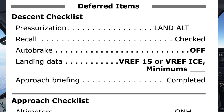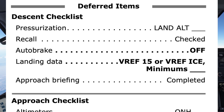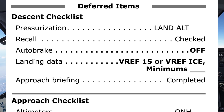Deferred items — Descent checklist. Pressurization: landing altitude 9 feet. Recall: checked. Auto brake: off. Landing data: VREF 15 minimums. Airport is VFR. Approach briefing: completed. Descent checklist complete.